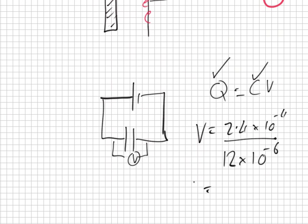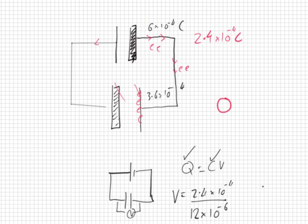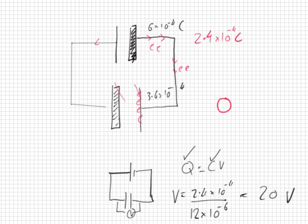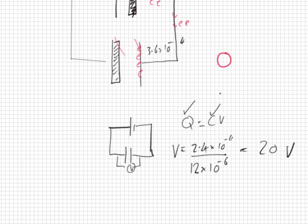Now, I know the Q. I know how much charge will go into this because I know how much is in here. So I know how much will travel into here. I know the Q. I also know the C. So the V will equal the Q over the C. So that's 2.4 times 10 to the minus 4 over 12 microfarads.